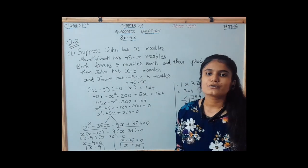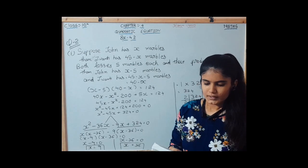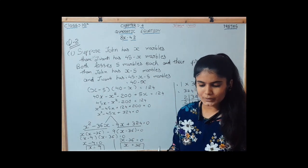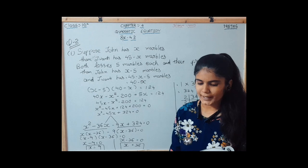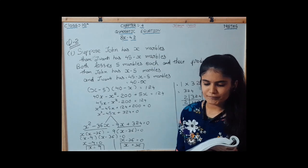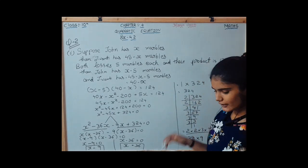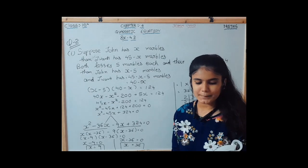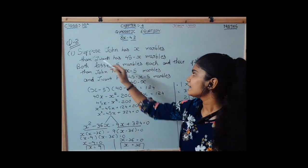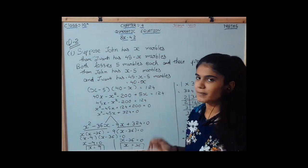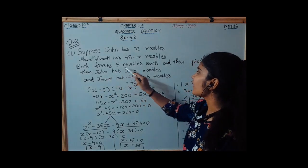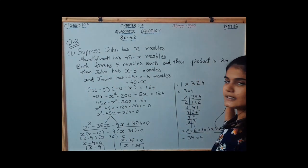In the word problems section, example 1: John and Jivanti together have 45 marbles. Both of them lost 5 marbles each, and the product of the number of marbles they now have is 124. We want to find how many marbles each had to start with. Suppose John has x marbles, then Jivanti has 45 minus x marbles, and their product after losing 5 each is 124.